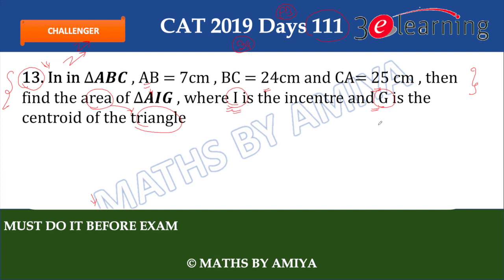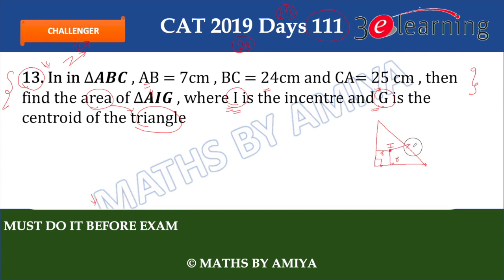First concept: incenter. In a right-angled triangle, if you draw the right-angled triangle, this point is the incenter. The coordinates of the incenter are (r, r) because it is at distance r from both axes. So the coordinate of the incenter is (r, r). This is the first learning of the video.